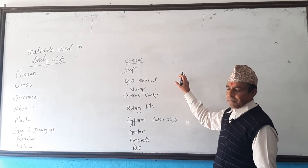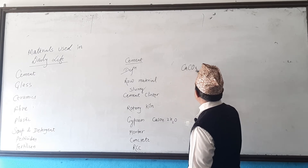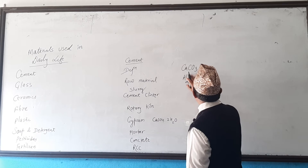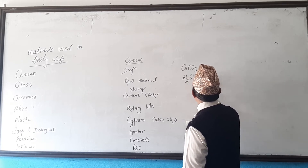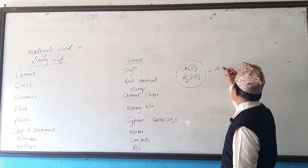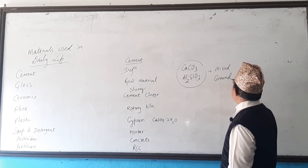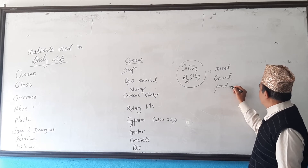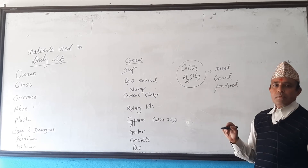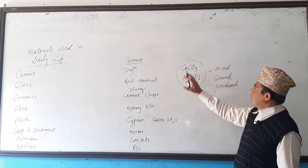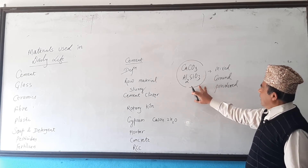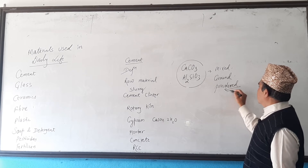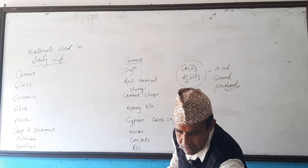While manufacturing cement, calcium carbonate (CaCO₃) and special type of clay (Al₂SiO₃) are taken and mixed together, then ground by machine — converted to smaller pieces and powdered — so that they can mix with water. That powder form of the mixture is the base material for cement.